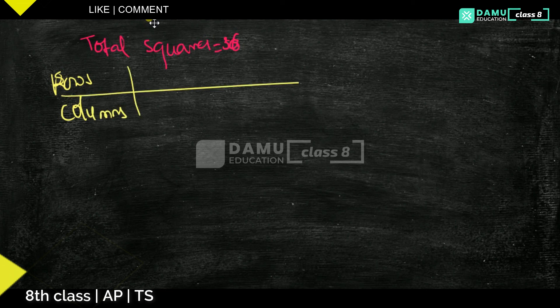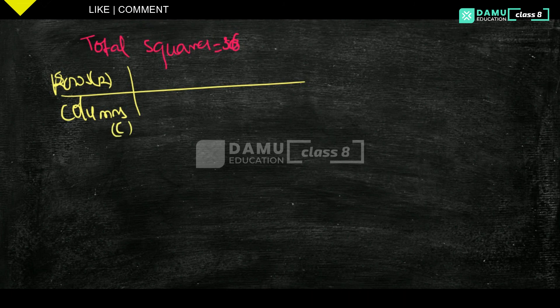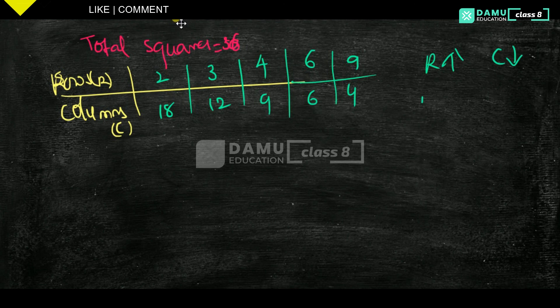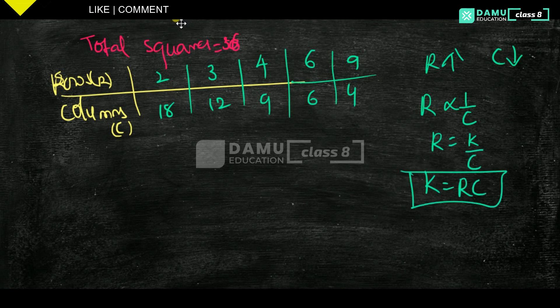So let's take rows R and columns C. If you take rows=2, columns=18. If you take 3, columns=12. If you take 4, columns=9. If you take 5, it will not come. 6: columns=6. Then 7 won't work. 8 also we will not get. Then 9: yes, it is 9 with 4. So rows are increasing and columns will decrease — R is inversely proportional to C. That is R equals K by C, then constant will be R times C.